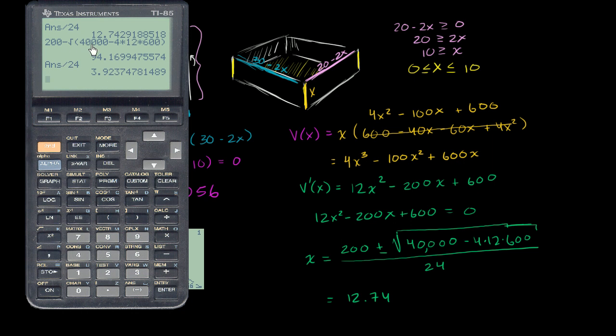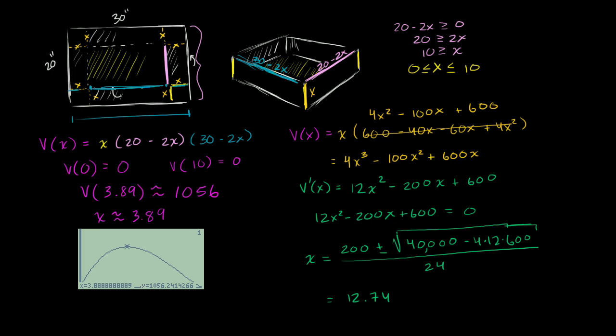Did I do that right? 200 minus 40,000 minus 4 times 12 times 600, all of that divided by 24. My previous answer divided by 24 gives me 3.92.